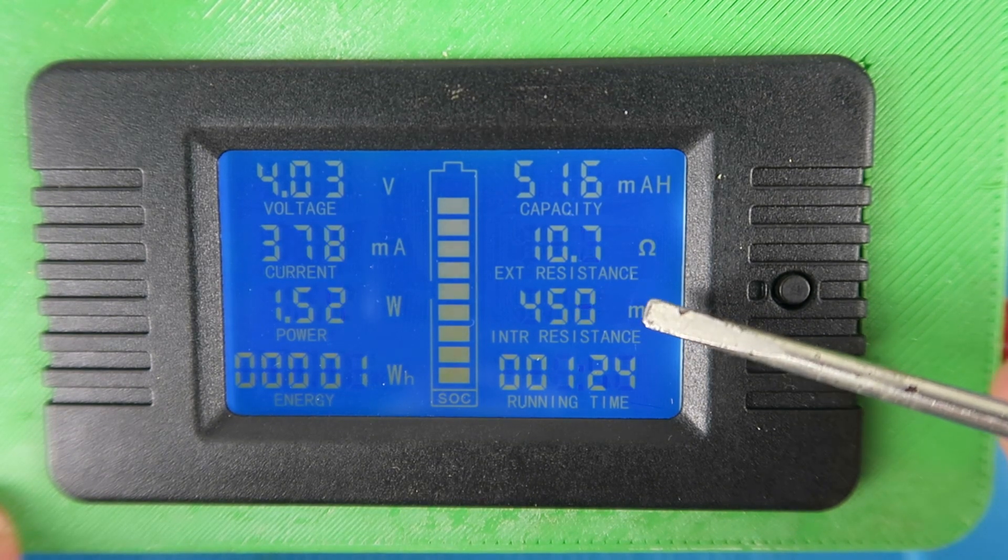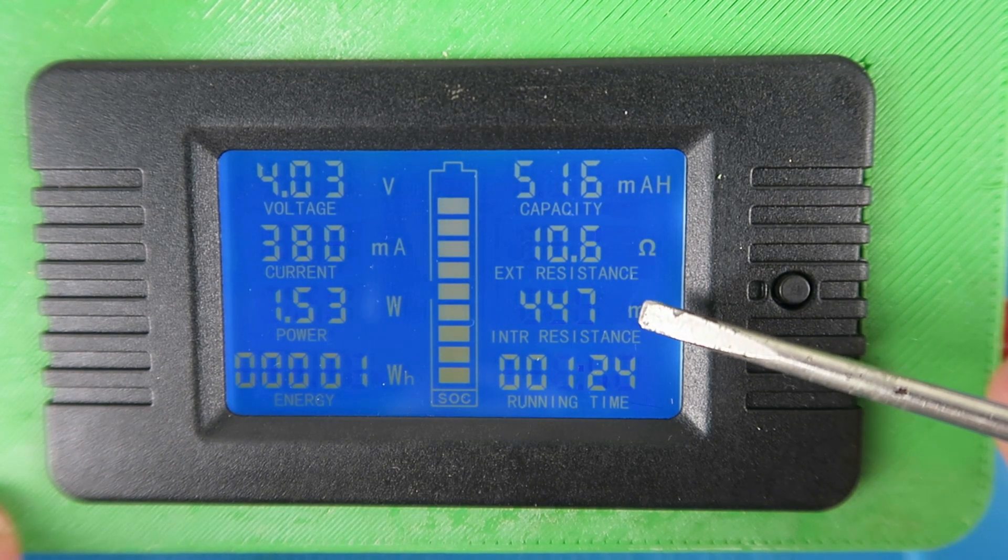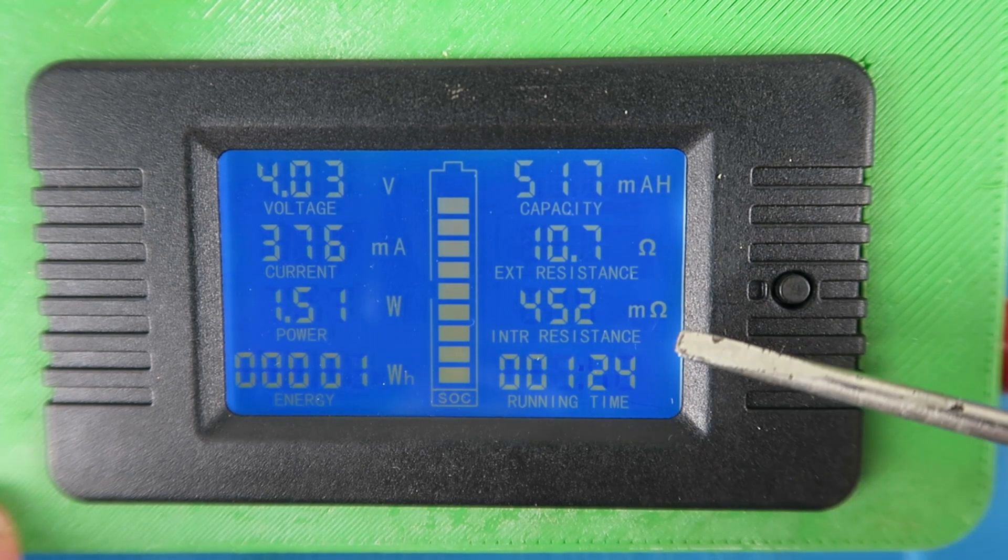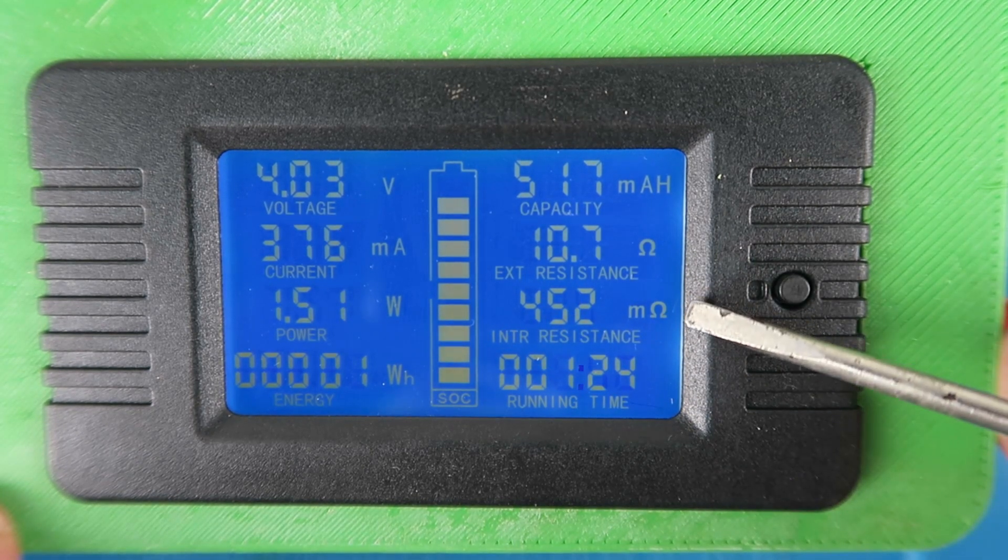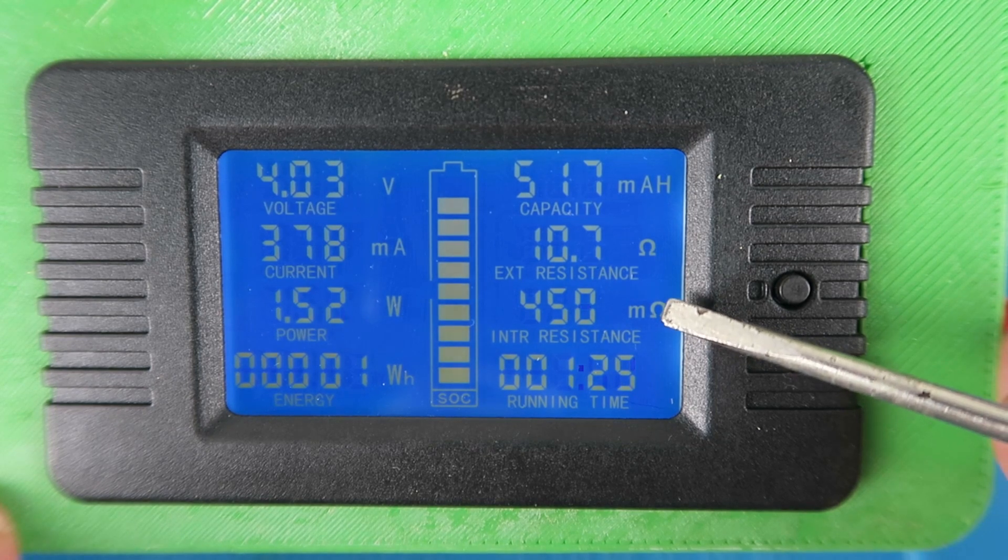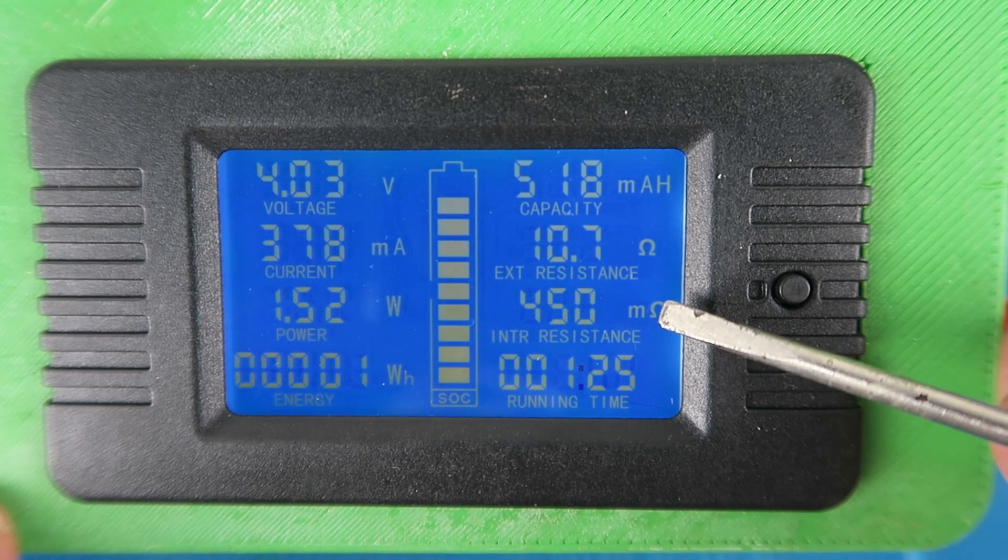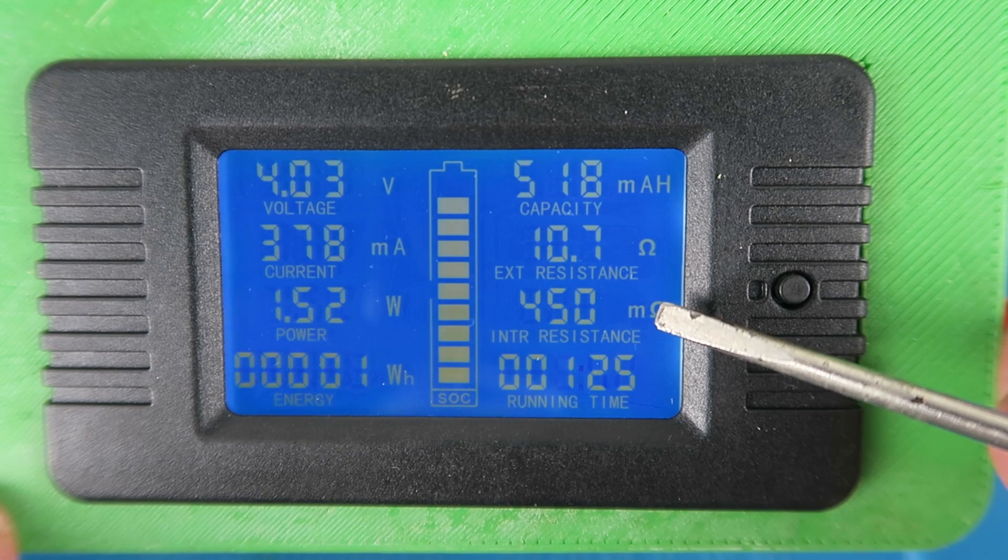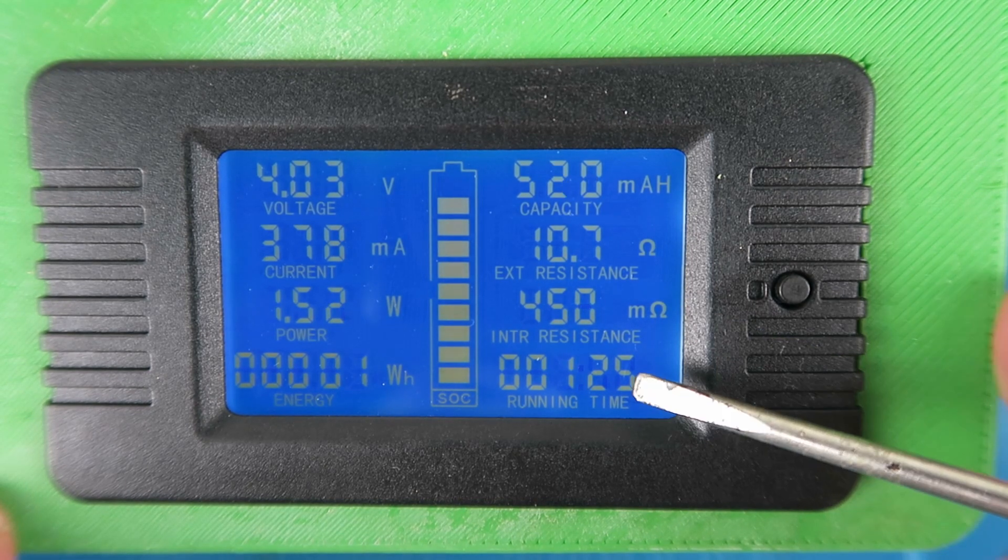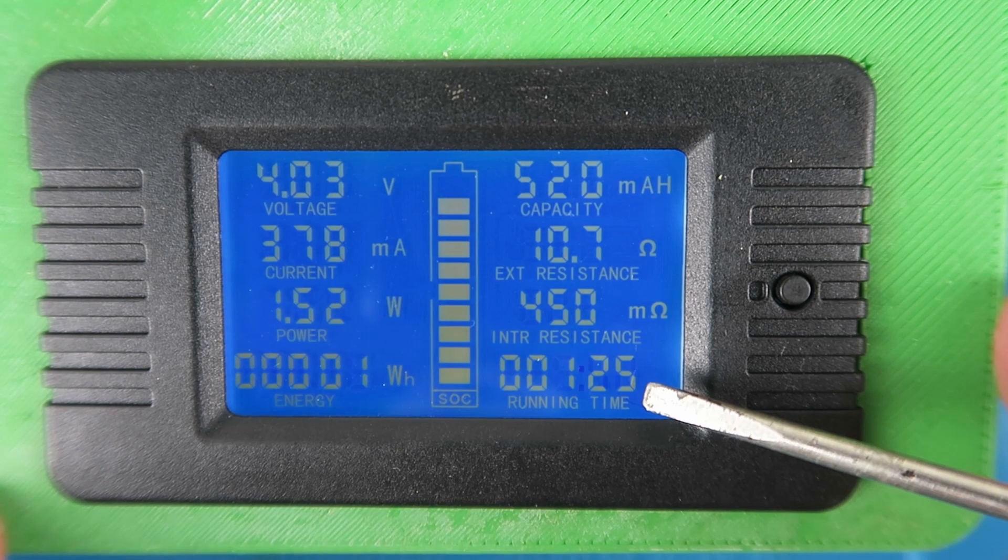That value will normally increase as the state of charge indicated here goes down. Generally speaking I always measure my internal resistance when the cell is fully charged. And finally at the bottom we have the running time. It's been running for an hour and 25 minutes.